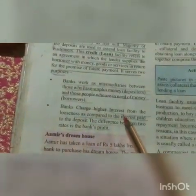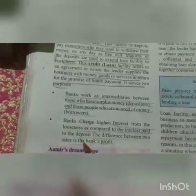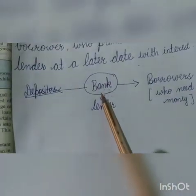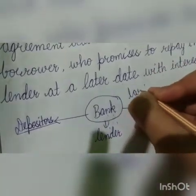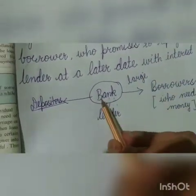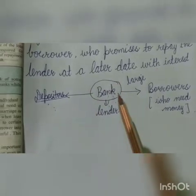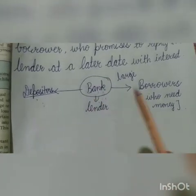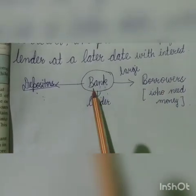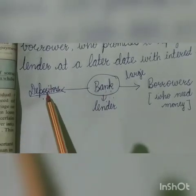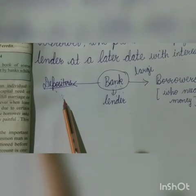Bank charges higher interest from the borrowers as compared to the interest paid to the depositors. Joh bank hai, joh borrower se large amount of interest lete hai, as compared to depositors ke money pe joh hai, kum amount interest ka lete hai. Matlab bank joh hai, joh bank se money borrow karayega, borrower ko zahada interest dena padega bank ko, as compared to joh amount depositor ne bank ke paas rakhha hai uspe joh interest joh bank provide karta hai.